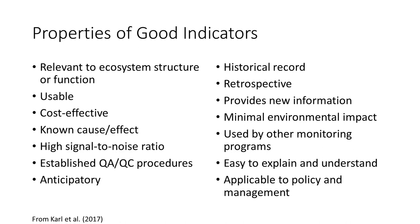It's important to have indicators that provide new information not already captured by other indicators. Minimal impact on the environment is also important—collection should cause the least disturbance possible. Indicators used by other monitoring programs should also be a priority. Indicators that are easy to understand and explain are always a good idea, as intuitive indicators are more effective at informing management decisions. Finally, indicators should be applicable to policy and management—relating to aspects of an ecosystem that can be managed or are tied to management policies.